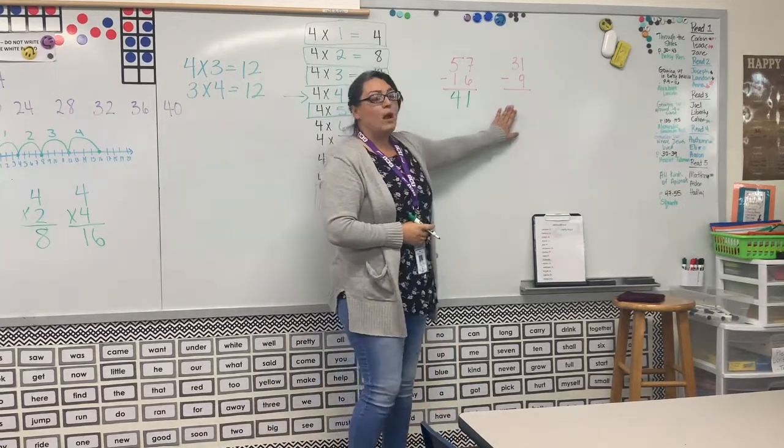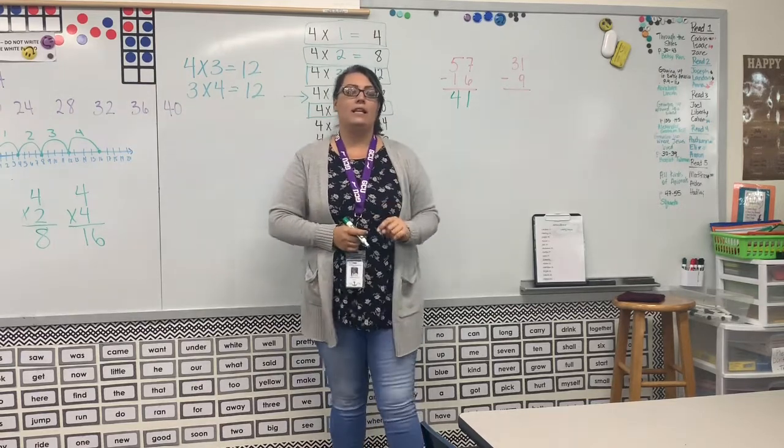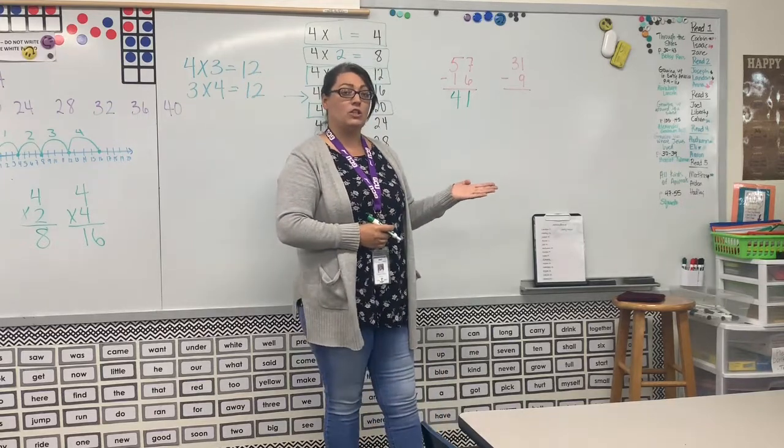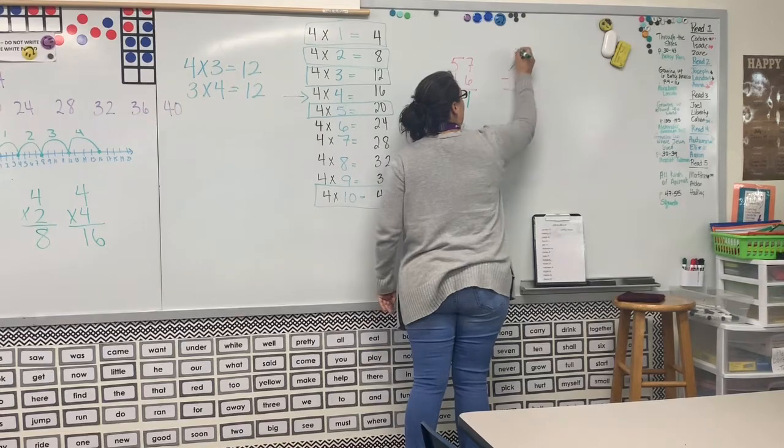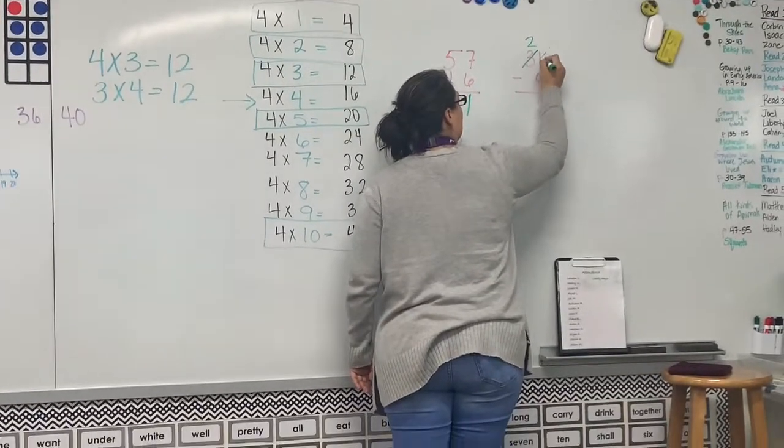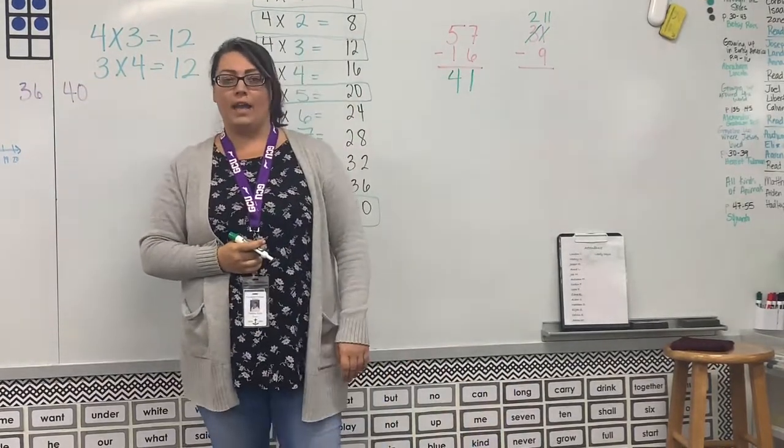Our next problem is 31 - 9. If I have one of something, can I take nine away? No, I can't. So what do I need to do? I need to go next door. I need to borrow. So my three becomes a two and my one becomes an 11. 11 - 9.